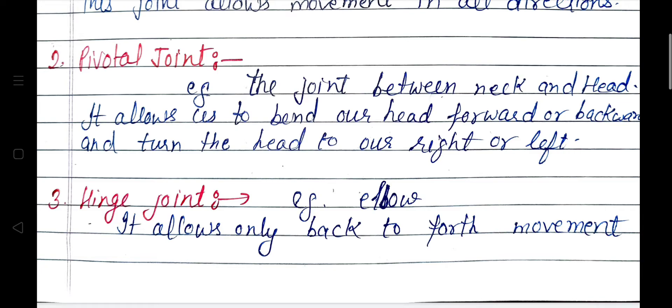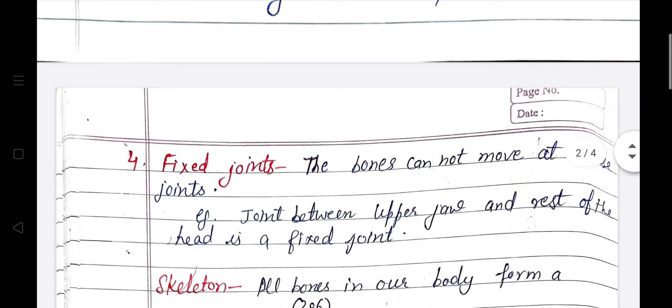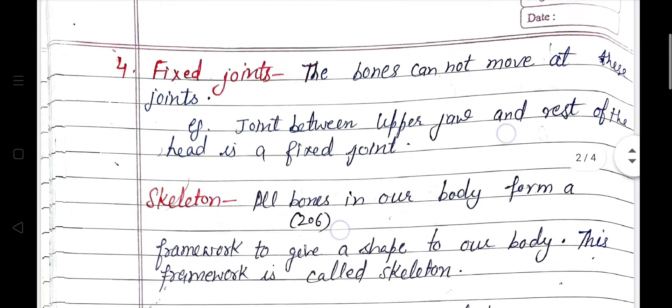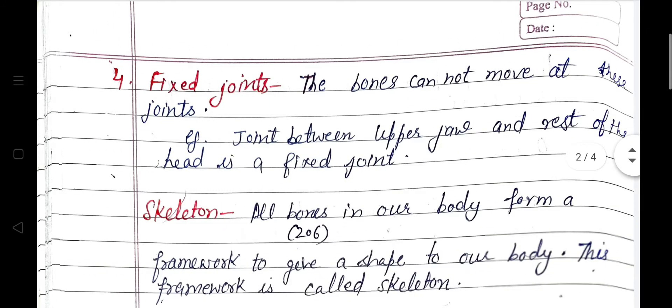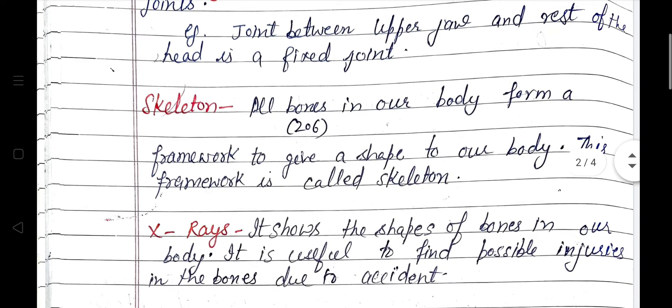Third, hinge joint — for example, elbow. It allows only back-and-forth movement. Fixed joints are joints where the bones cannot move. For example, the joint between the upper jaw and the rest of the head is a fixed joint. Skeleton — all the bones in our body form a framework to give shape to our body. This framework is known as the skeleton.